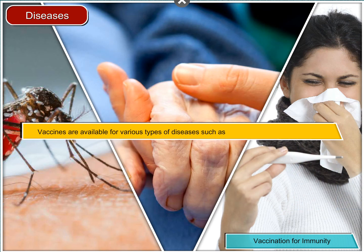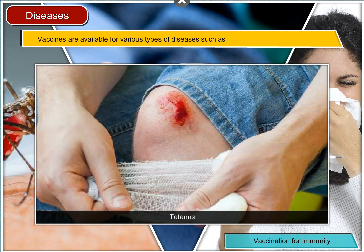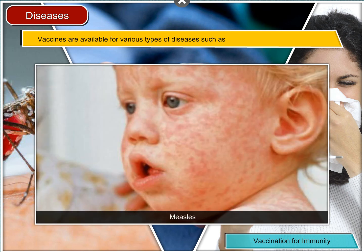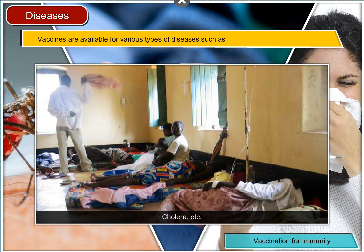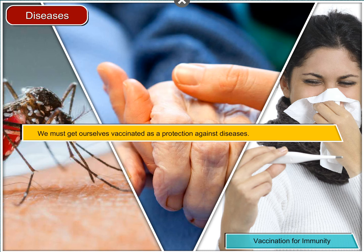Vaccines are available for various types of diseases such as typhoid, tetanus, polio, measles, cholera, etc. We must get ourselves vaccinated as a protection against diseases.